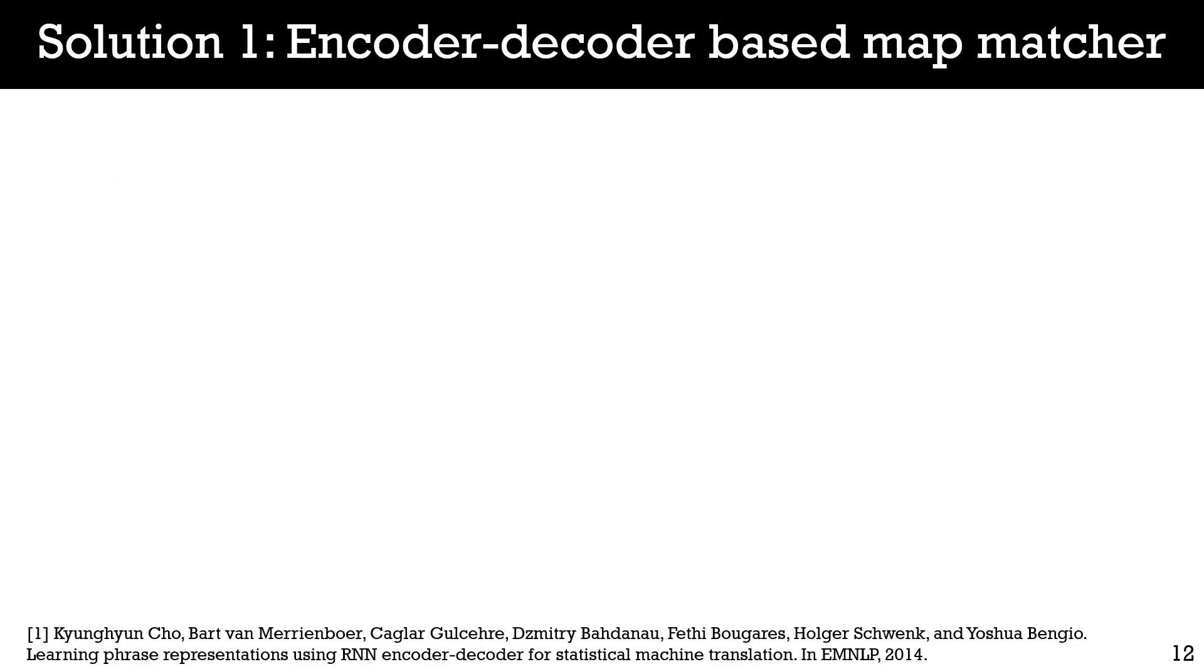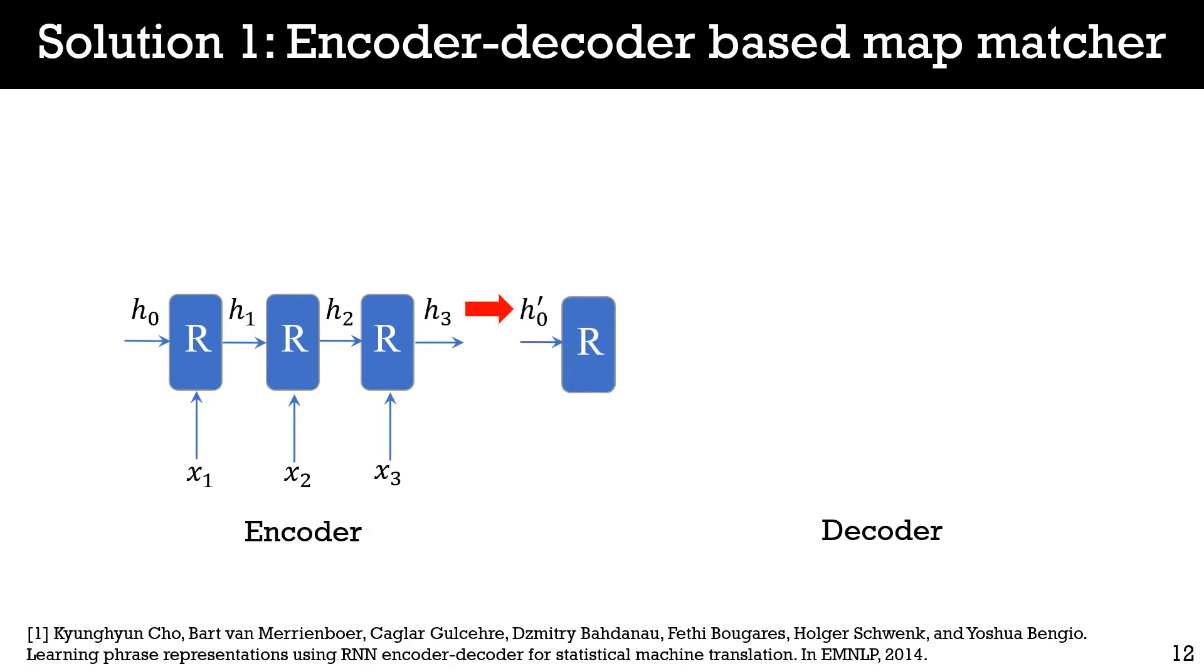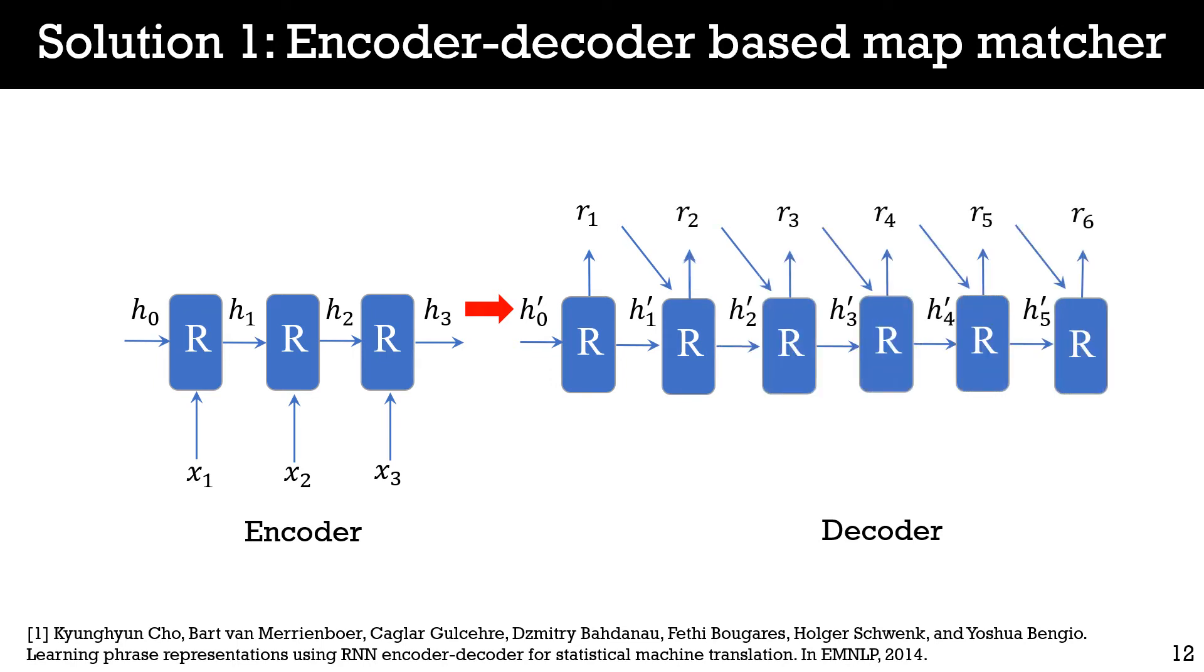To this end, we propose an encoder-decoder-based map matching model, that is composed of two recurrent neural networks, named as encoder and decoder. Given a cell tower sequence with any number of cell towers, the encoder first reads each cell tower successively and transforms them into a sequence of hidden vectors. After encoding all the inputs, we get a final hidden vector h3 that conserves the location information of the whole input sequence. Then, h3 is acted as an initial hidden state h0' and fed into the decoder network. At each step, the decoder will generate a road and hidden state that will be used for next inference. Finally, the decoder generates a sequence of roads as the map matching results. Based on this, we can easily handle different lengths of input and output.